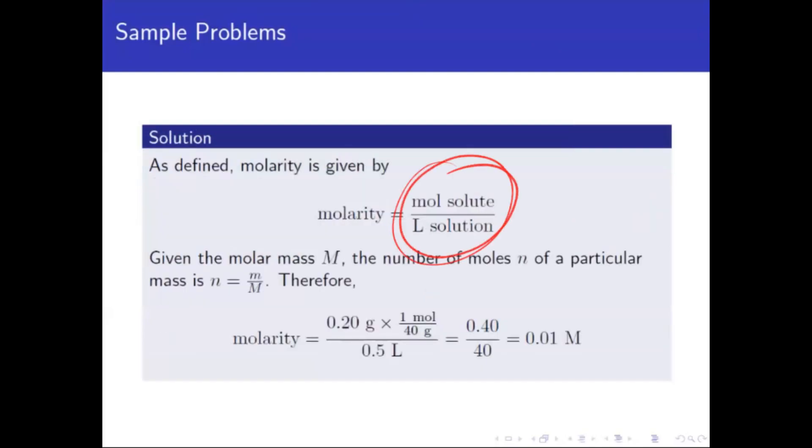And as defined, molarity is moles of solute over liters of solution. Given the molar mass M, the number of moles n of a particle is n over M. Therefore, molarity is 0.20 grams, and we need the molar mass, which is 40 grams per mole. So we need this ratio.